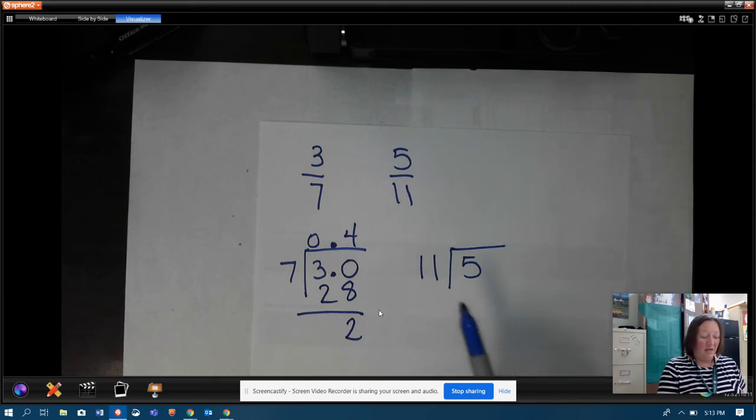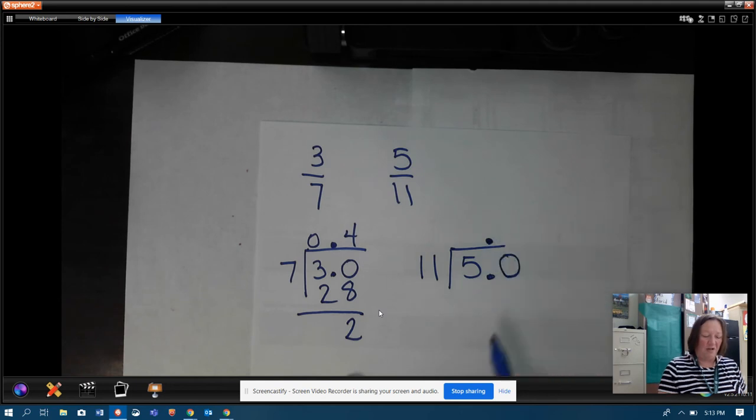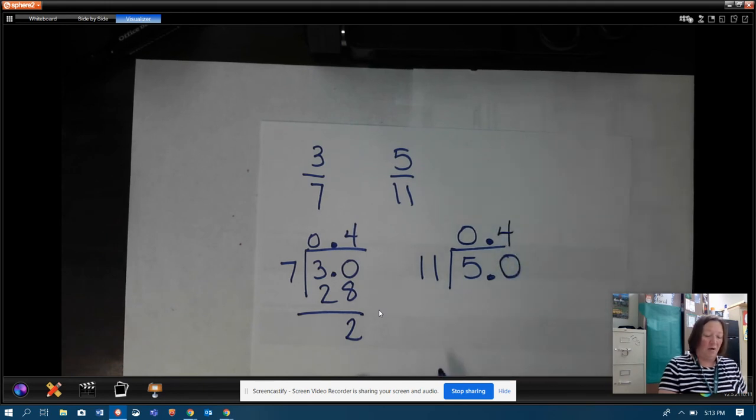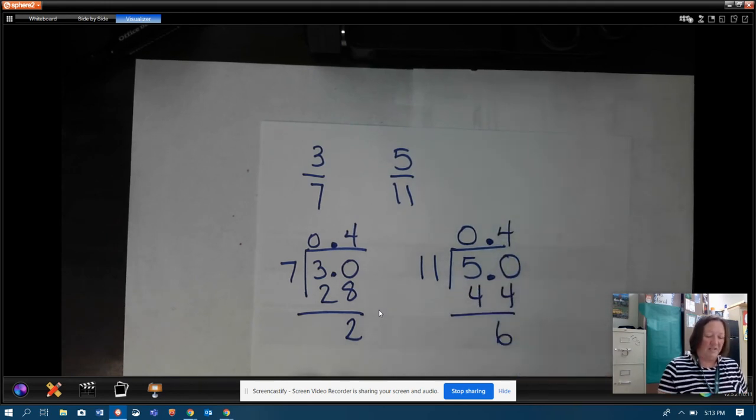Okay, let's see what happens if I come over here. If I put a decimal and a zero and I bring that decimal up, eleven into five doesn't work, but eleven into fifty is four. Four times eleven is forty-four with six left over.